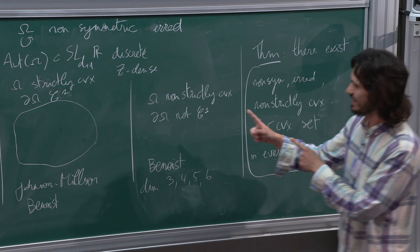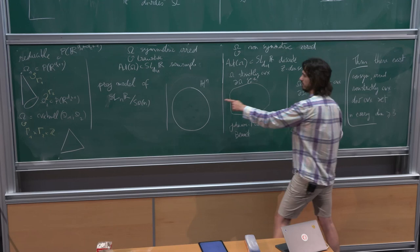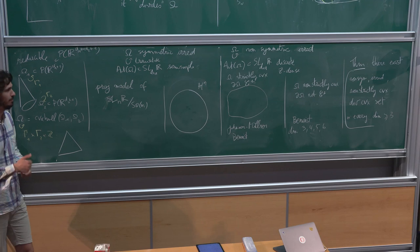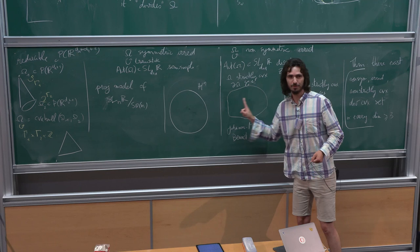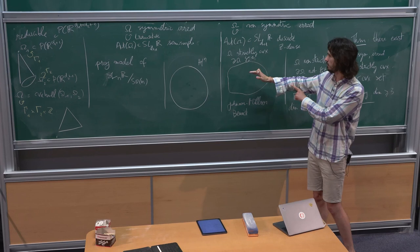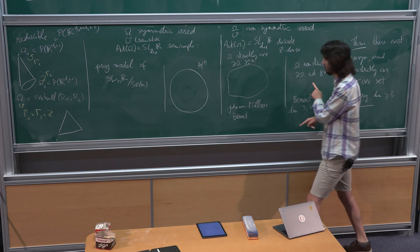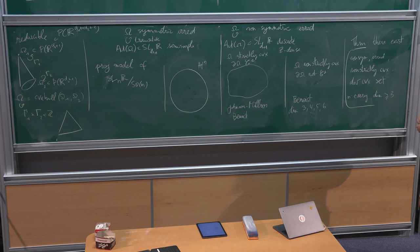It was known before that they do not exist in dimension 2 — this is due to Benzeky. Regarding the limit set: in the rank-1 cases, the limit set is the full boundary, but in the higher-rank cases it is not — that requires further work of Zimmer.